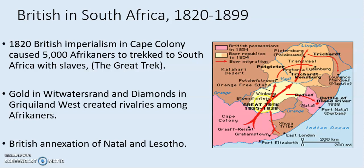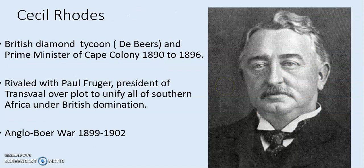This will lead to the Anglo-Boer War. This is where Cecil Rhodes comes in. Cecil Rhodes is a British diamond tycoon who served as Prime Minister of Cape Colony. He's backed by the British and rivalried with Paul Kruger, the President of Transvaal. The goal was to imperialize the entire land and unify the entire southern portion of Africa under British domination as part of the British colony. You begin to see the Anglo-Boer War between 1899 and 1902.